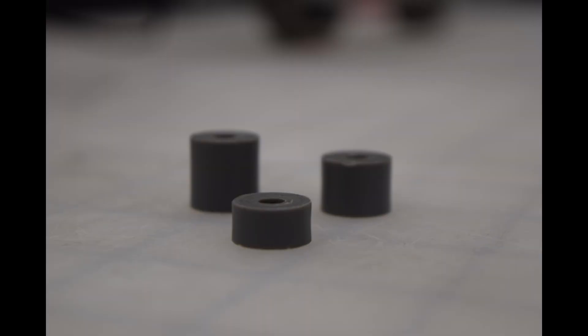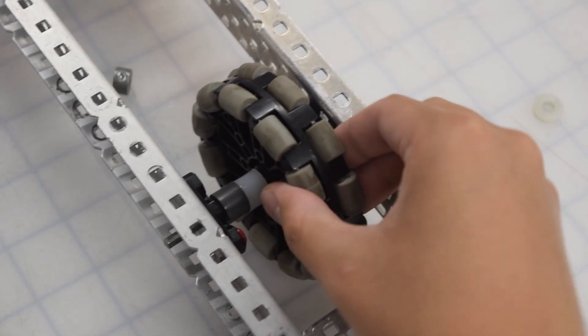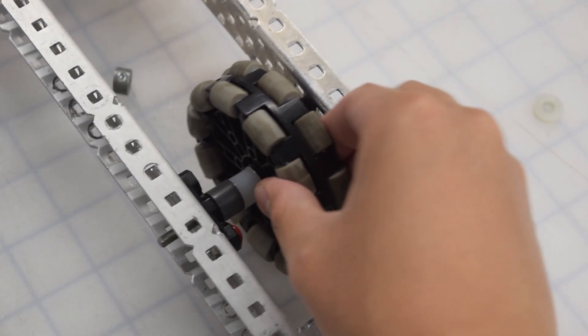Spacers are also important. There are a few different forms of them, but you should mainly only use these thick nylon spacers. They can be used on axles to stop parts from wiggling around without needing to use a bunch of axle collars.